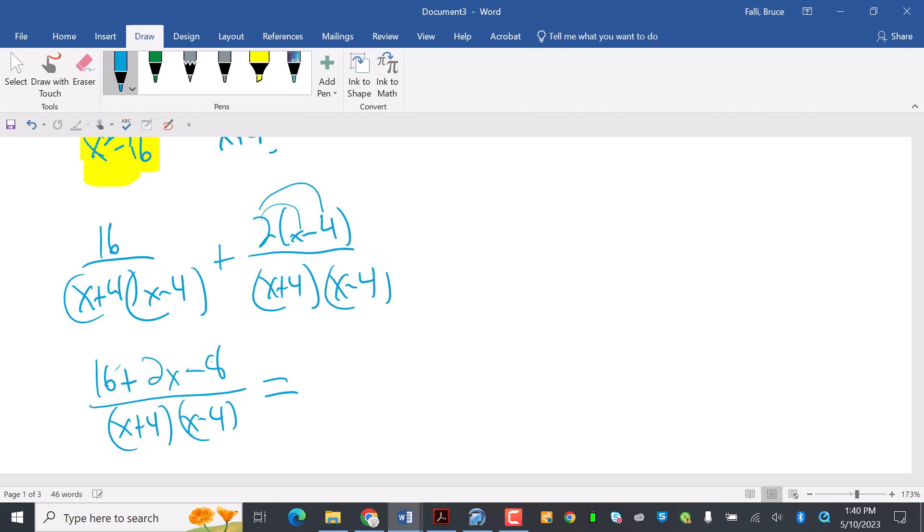And I'm going to combine that a little bit. So I'm going to have 16 plus 2x minus 8 over x plus 4, x minus 4. And then I'm going to combine my terms. 16 minus 8 is 8, so I'm going to have 2x plus 8. So I did 16 minus 8 is 8 over x plus 4, x minus 4. Now, very often when you've got even terms, it's like, okay, I can factor something out of here. And I can. I can take a 2 out.